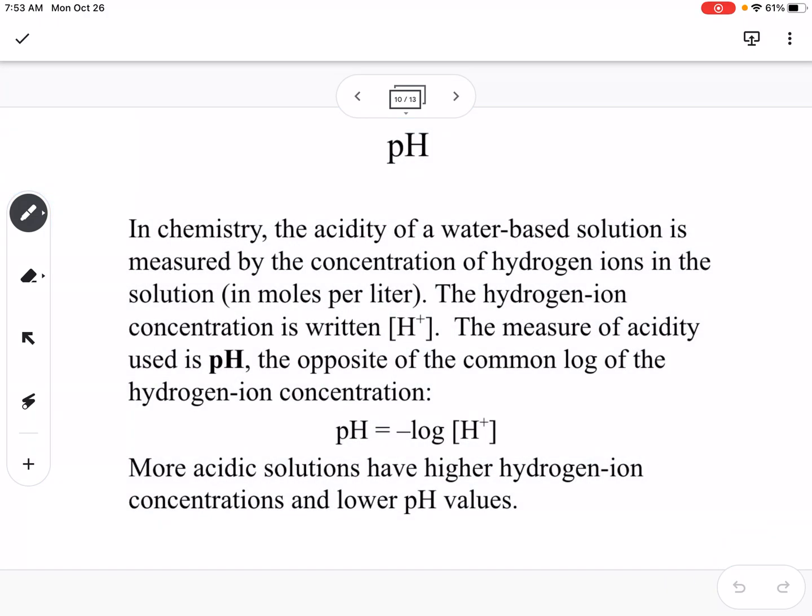Another example, real life example of where we use logs. In chemistry, the acidity of a water-based solution is measured by the concentration of hydrogen ions in moles per liter. pH is negative log of the hydrogen ion concentration, so that's how we find the pH of a substance. More acidic solutions have a higher hydrogen ion concentration and lower pH values.